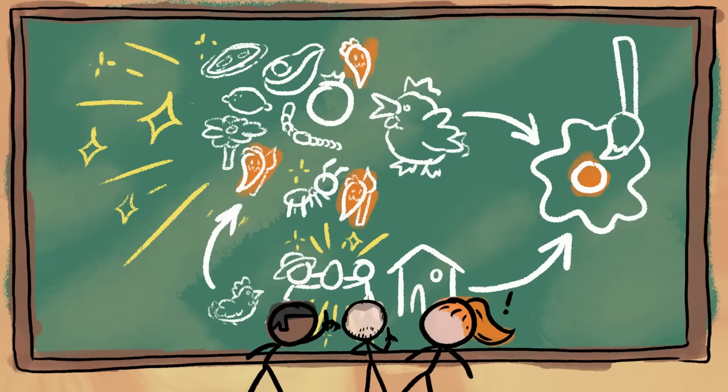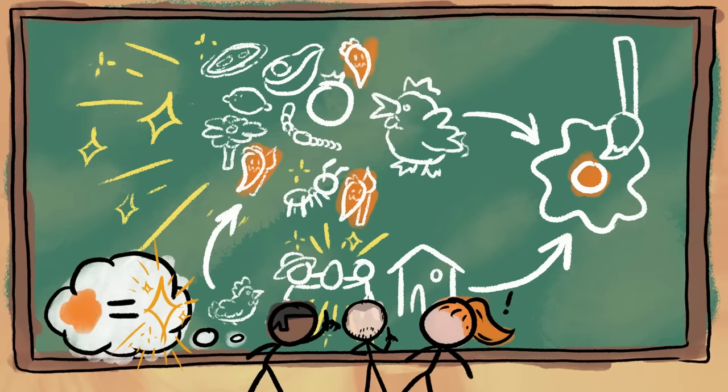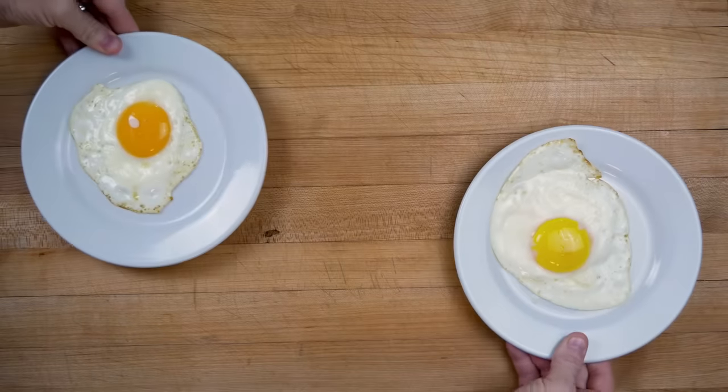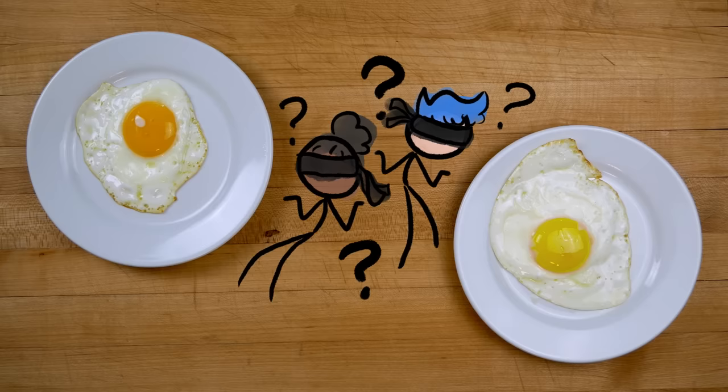Which are egg-cellent points, and probably do play into our egg-spectation that darker-yolked eggs are going to taste better. But they don't seem to create an actual difference in the taste of eggs. Or at least not enough of a difference that most consumers can recognize it blindfolded.